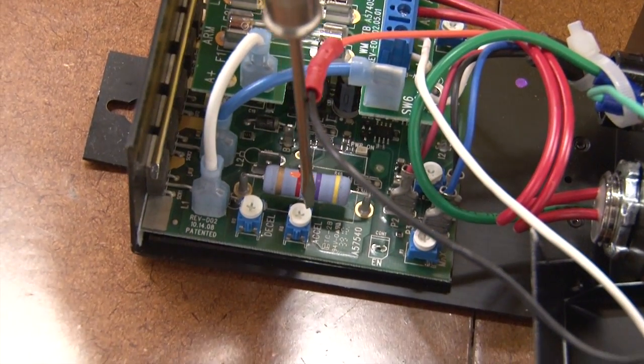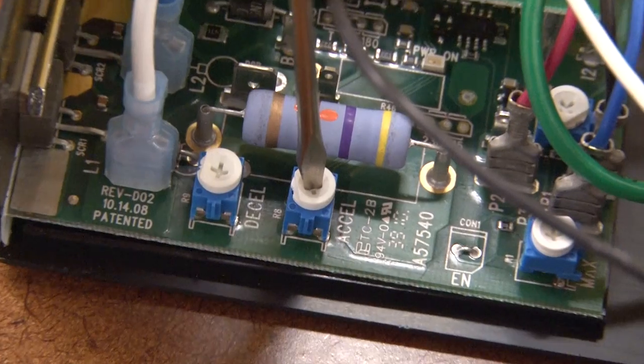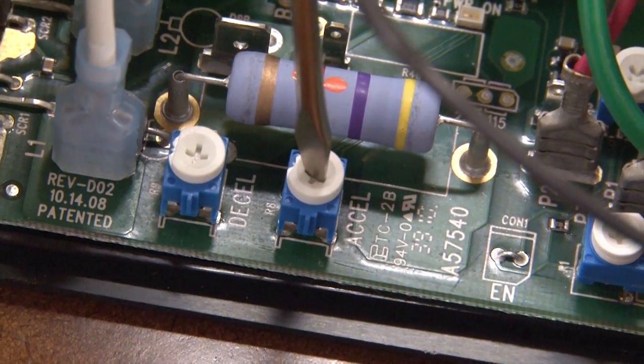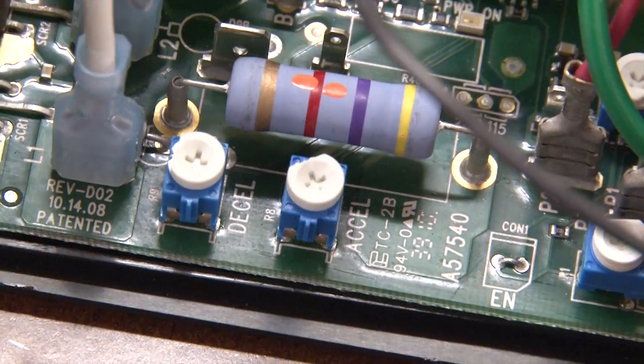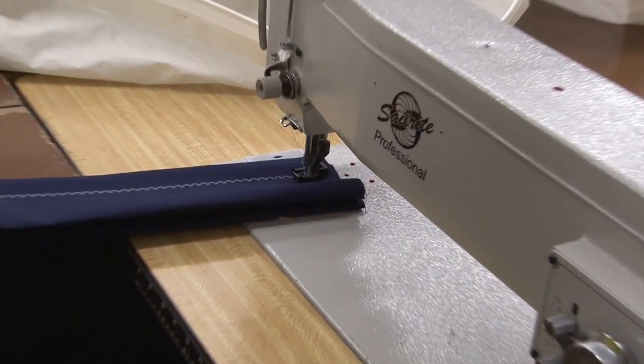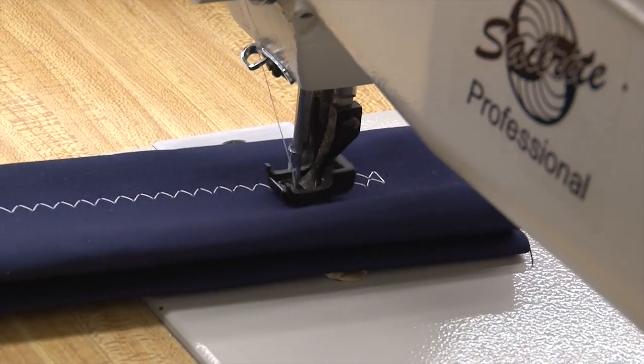And let's first play with the acceleration. Now what I'm going to do is I'm going to turn this clockwise and what this is going to do is this is going to slow down the acceleration rate. So you'll notice I'm going to press the pedal all the way down and watch it will take it a while to ramp up. It's all the way down.